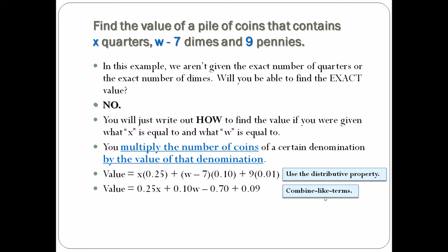We need to combine like terms, so we look for matches. Are there any other numbers with an x next to it? Nope. So this one doesn't have any matches, so it's pretty much gonna stay. Do we have any other numbers with the w? Nope. And just because you have an x doesn't mean you can combine with the w. Here I have a negative 70 cents and a positive nine cents. These are just regular old numbers—you can combine those.